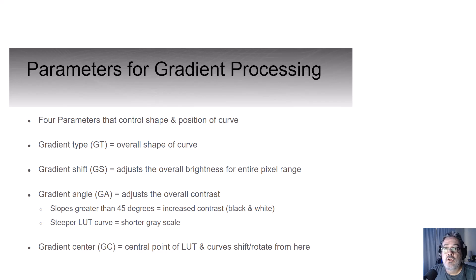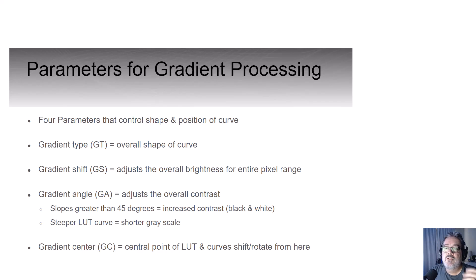There are four parameters that determine the shape and position of the curve in gradient processing. Gradient type is the overall shape. Gradient shift adjusts the overall brightness for the entire pixel range — brightness is controlled by left to right changes in the curve. Gradient angle adjusts the overall contrast; contrast is influenced by the steepness of the curve, and slopes greater than 45 degrees have increased contrast or very black and white images. A steeper lookup table curve means a shorter grayscale and higher contrast. Gradient center is the central point of the lookup table, and curves shift and rotate from that point.